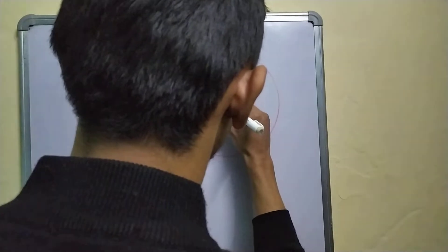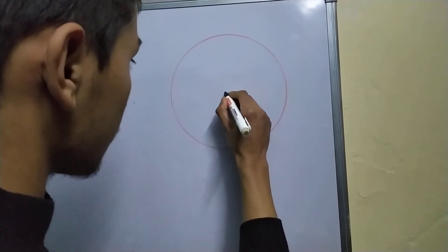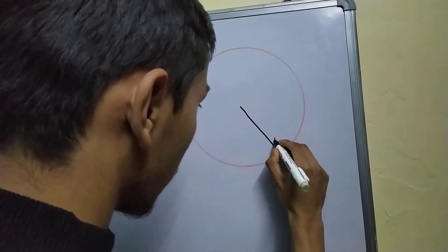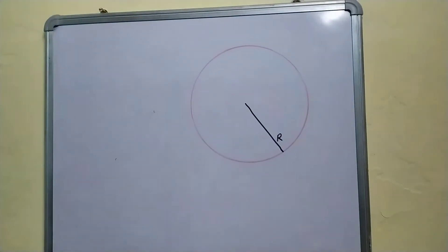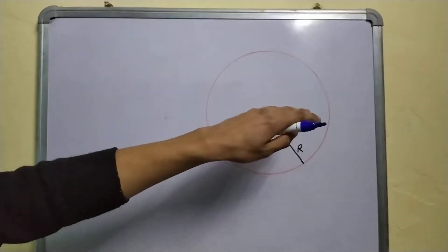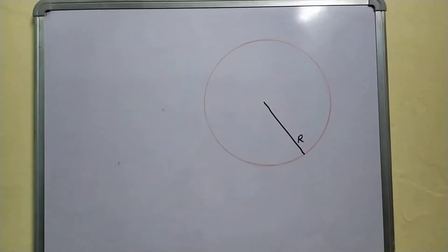Here is the center of this body. Let the radius of this body be capital R, and we will use Gauss law for gravity to prove this result.